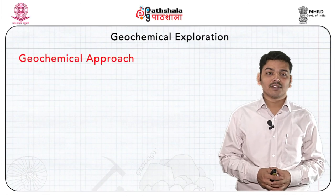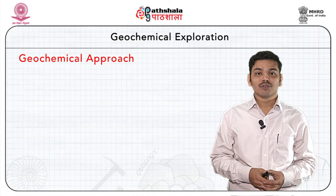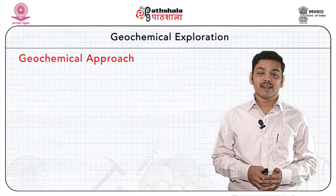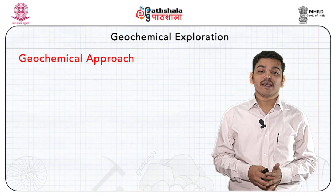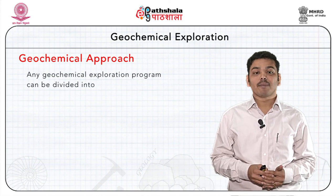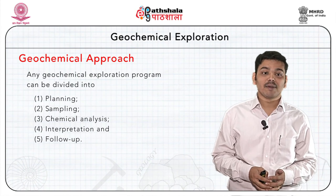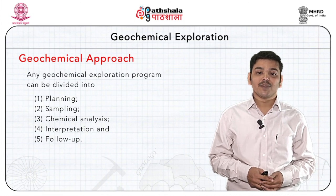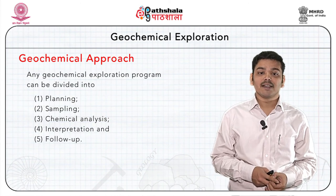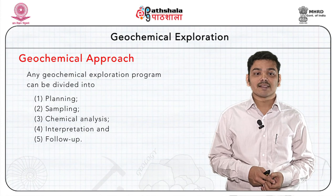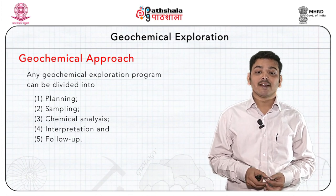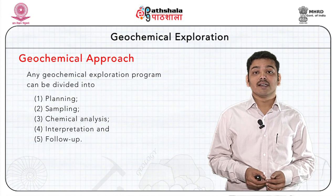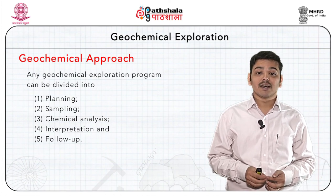The next section discusses the geochemical approach — what should be our approach in any geochemical exploration program. Any such program can be divided into several stages: planning, sampling, chemical analysis, interpretation, and follow-up. The exploration program is based on systematic sampling. Decisions need to be taken considering parameters like cost, nature of material sampled, and density of samples, in addition to analytical technique. A more expensive method would likely be the most effective, and thus cost-benefit ratios must be considered carefully.